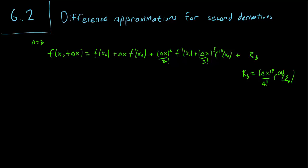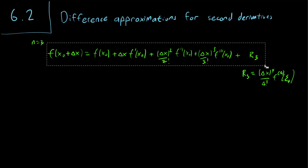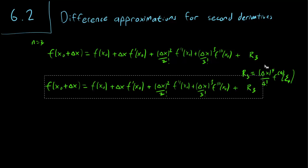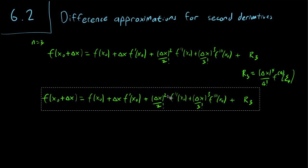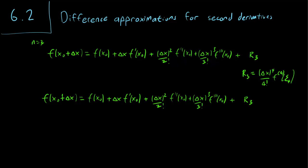Let's take this Taylor series and take the other Taylor series, replacing delta x with minus delta x instead. We replace all the plus signs with minus signs. x0 equals minus delta x, so this becomes minus delta x. The delta x squared term stays the same, but delta x cubed does not stay the same. The remainder actually stays exactly the same.